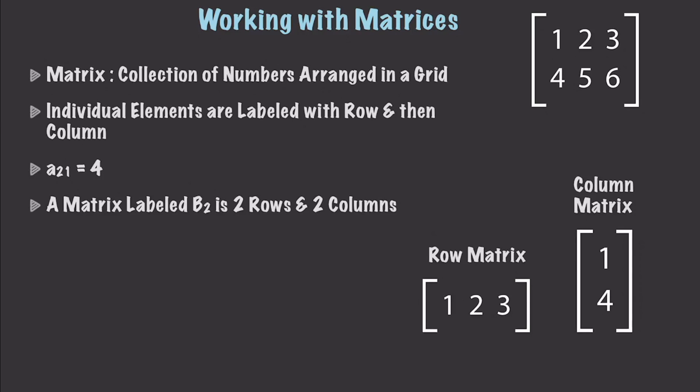In the example up here, this is a matrix that has two rows as well as three columns. And whenever you refer to individual elements in a matrix, you list first the row and then the column. So over here where we have A21, that is referring to the element in the second row and the first column.